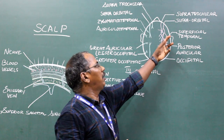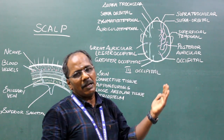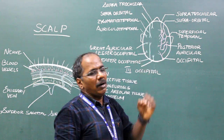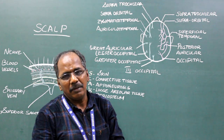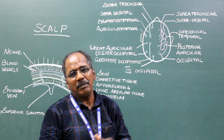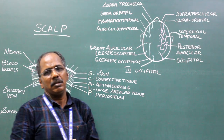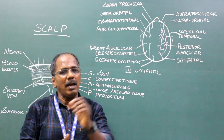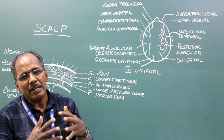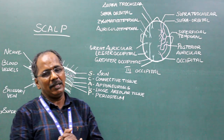The first two arteries — supratrochlear and supraorbital — are branches from the internal carotid artery and lie in front of the ear. The remaining three arteries lie behind the ear. Thus, the scalp acts as a potential collateral circulation between the external and internal carotid arteries.